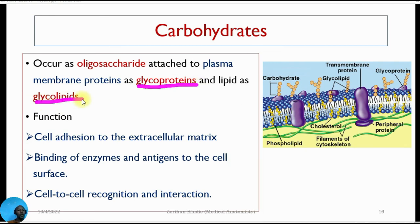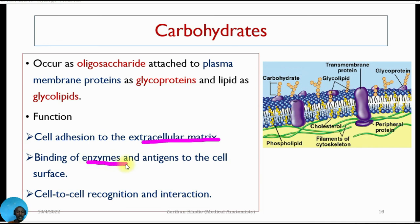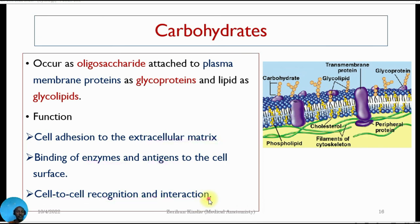Glycoproteins and glycolipids attach with the plasma membrane protein. Carbohydrates are mainly found on the outer parts of the plasma membrane, attached with peripheral and transmembrane proteins. They have functions including cell adhesion to extracellular material, binding of enzymes and antigens, and cell-to-cell recognition and interaction.